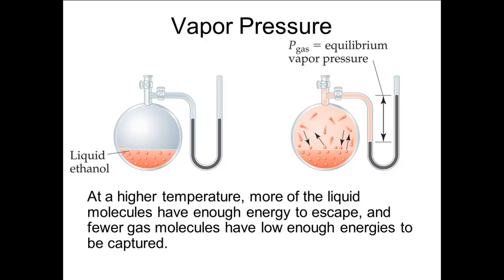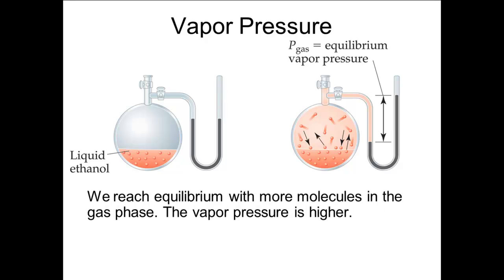At a higher temperature, fewer molecules of the gas can be captured, and more molecules of the liquid can escape. So we need more molecules in the gas state to reach equilibrium. This changes the proportion of gas molecules in the equilibrium, and we have a higher vapor pressure.